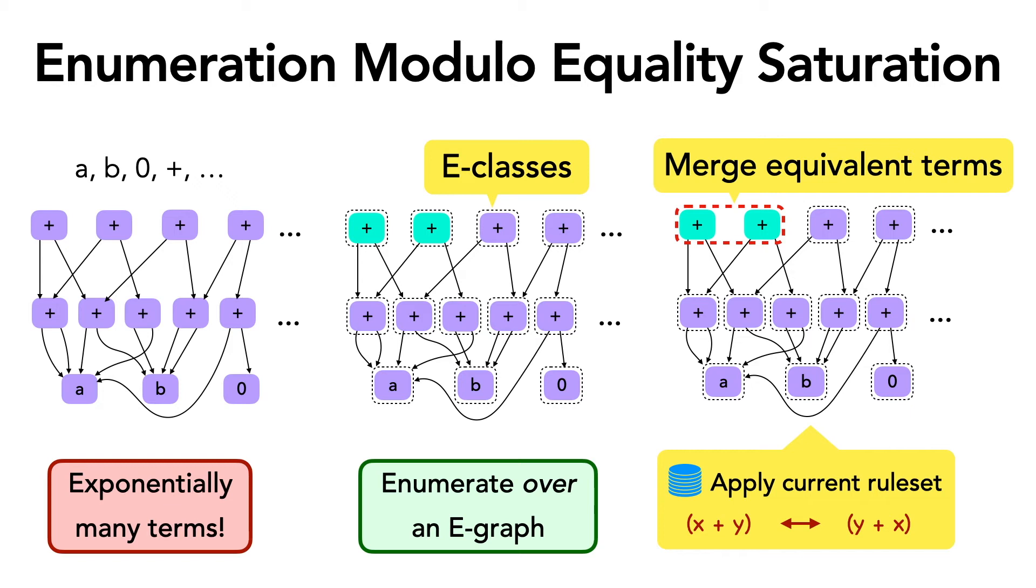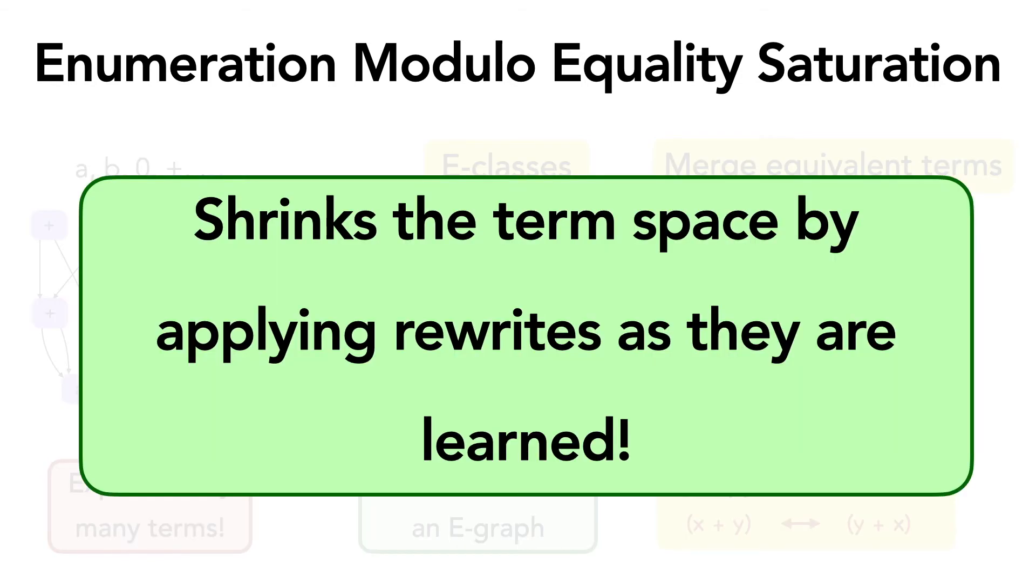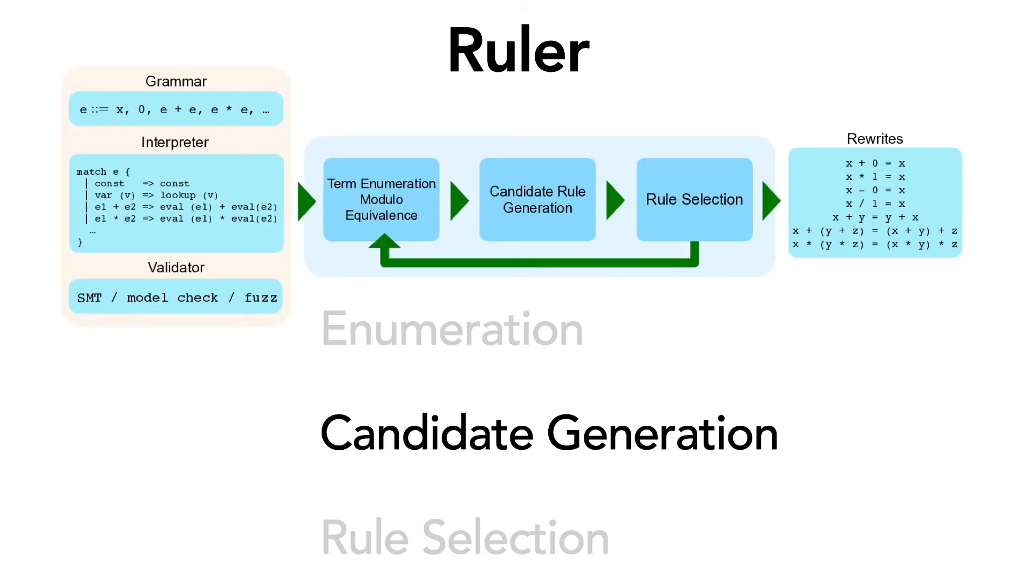The nice thing about this is that in the next round of enumeration, there will be fewer e-classes to enumerate over, which dramatically reduces the size of the e-graph. So the key insight here is that Ruler uses equality saturation to shrink the term space by applying the rewrites as they're being learned. But how do we bootstrap the learning of the rules at all?